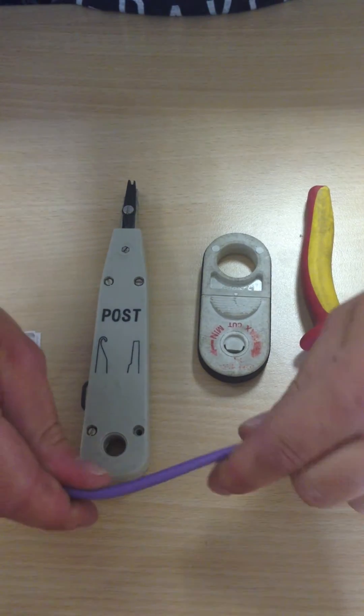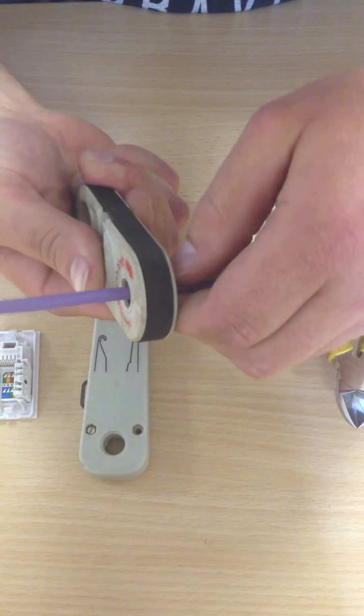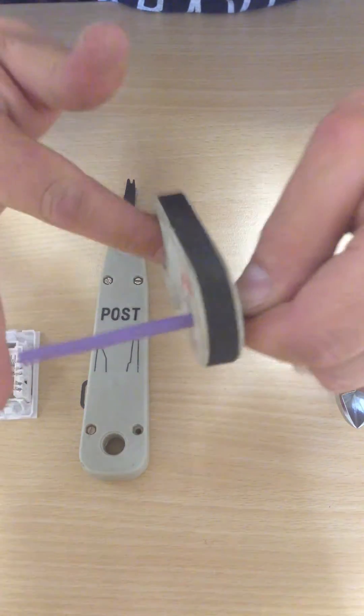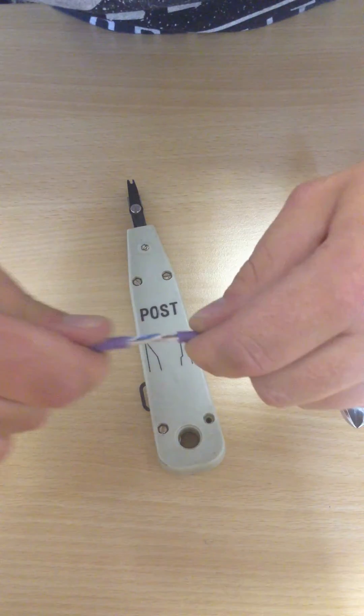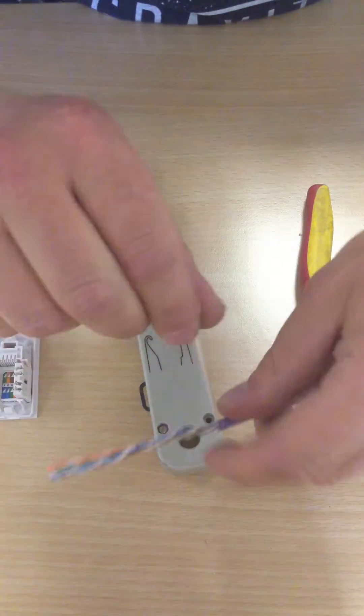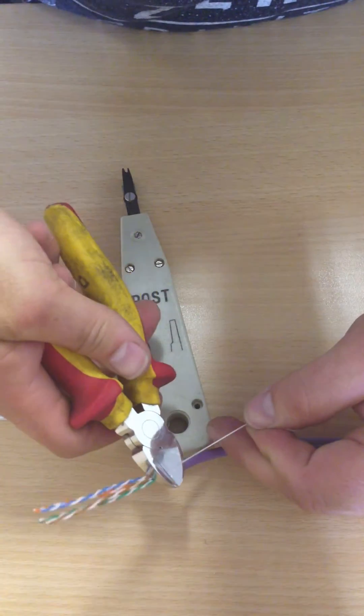First of all, you want to get your Cat5 cable, use the strip back tool and strip back about 50-60mm of the sheathing. Twist that round, break the sheathing and pull that off. This is used for stripping back the cable if you need to go any further, but we don't need that so we will cut that off.